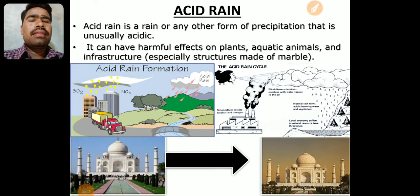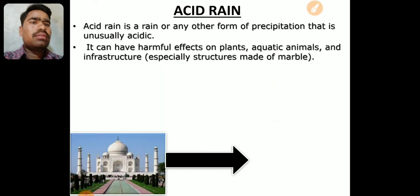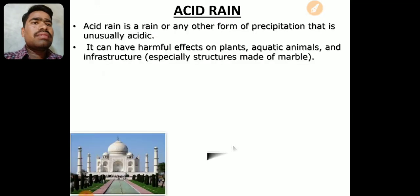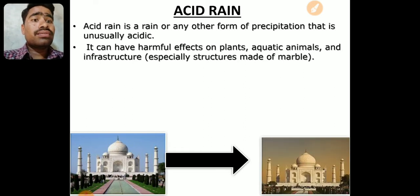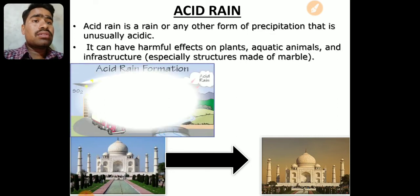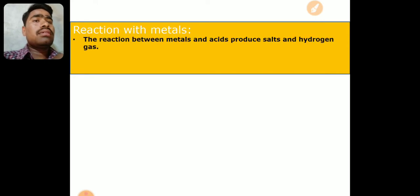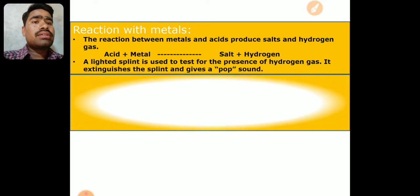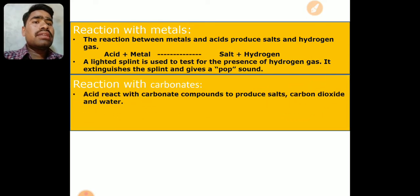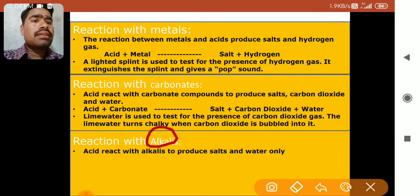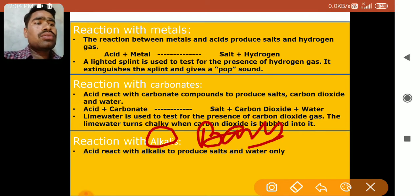Hello students, welcome back. In the last period we saw what acid rain is, its effects, and organic acids. We also saw how acid rain forms and how it is harmful for marble buildings, also called marble cancer. We then covered the properties of acids: acid reacts with metal, acid reacts with carbonates, acid reacts with bases, and reaction with alkali — alkali meaning strong bases.